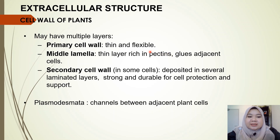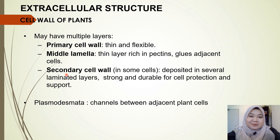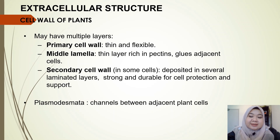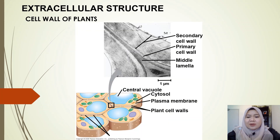Pectin is a sticky polysaccharide that glues adjacent cells together. The secondary cell wall is deposited in several laminated layers and is strong and durable for cell protection and support. The secondary cell wall is secreted once the cell stops elongating. We also have structures called plasmodesmata, which are channels found between adjacent plant cells — we'll discuss those in more detail later.